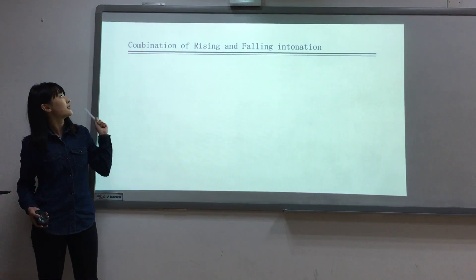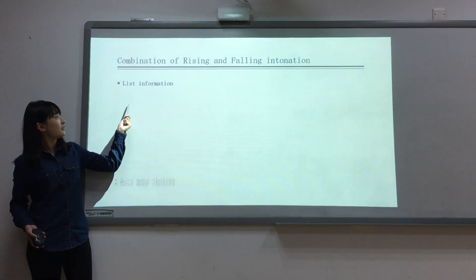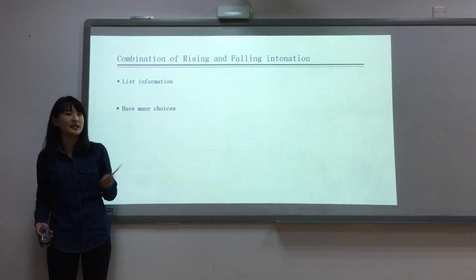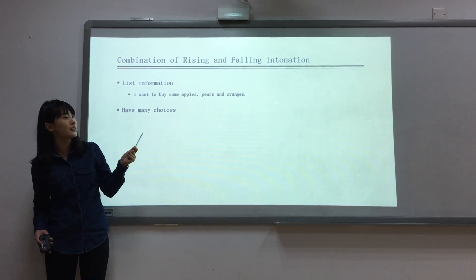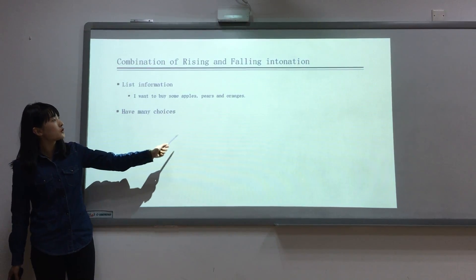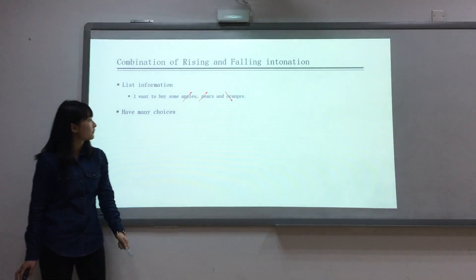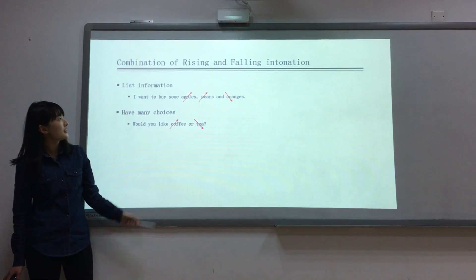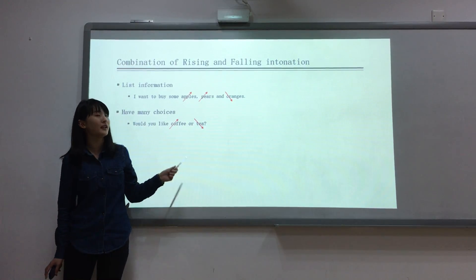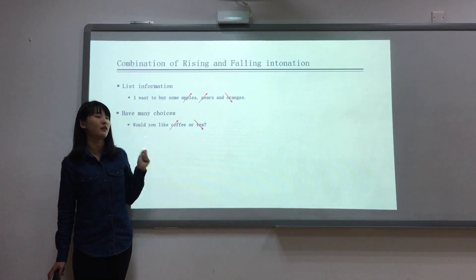And third is combination of rising and falling intonation. There are two situations that can use this pattern: first is list intonation and second is with multiple choices. For example, 'I want to buy some apples, pears, and oranges.' 'Would you like some coffee or tea?' You can see they both have rising and falling intonations. Let me make the sentence more alive but not boring.